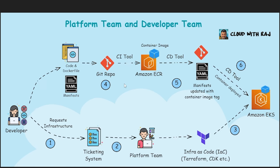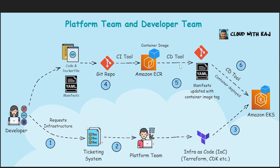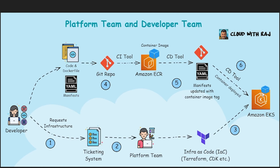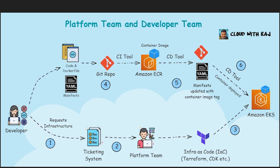The developer checks in their code, Dockerfile, and YAML manifests into a Git repository. The CI tool — such as Jenkins — then runs the Dockerfile, creates a container image, and saves it to a repository like Amazon ECR. The CD tool then updates the Kubernetes manifest with the container image tag and runs a kubectl apply command to deploy it from ECR. In summary, the platform team manages infrastructure with guardrails, while the developer team deploys applications on top of it. The platform team also handles upgrades, maintenance, and provisioning of logging and monitoring agents.